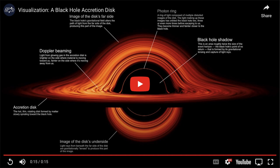Then we do see the accretion disk itself — that is the area where material is being heated up, spiraling around the black hole at very high speeds and heated to very high temperatures. And finally, at the bottom, we see the underside of the disk. Because of the strong gravity, space is so distorted that we not only see the top of the disk but we can see the bottom of the disk at the same time.